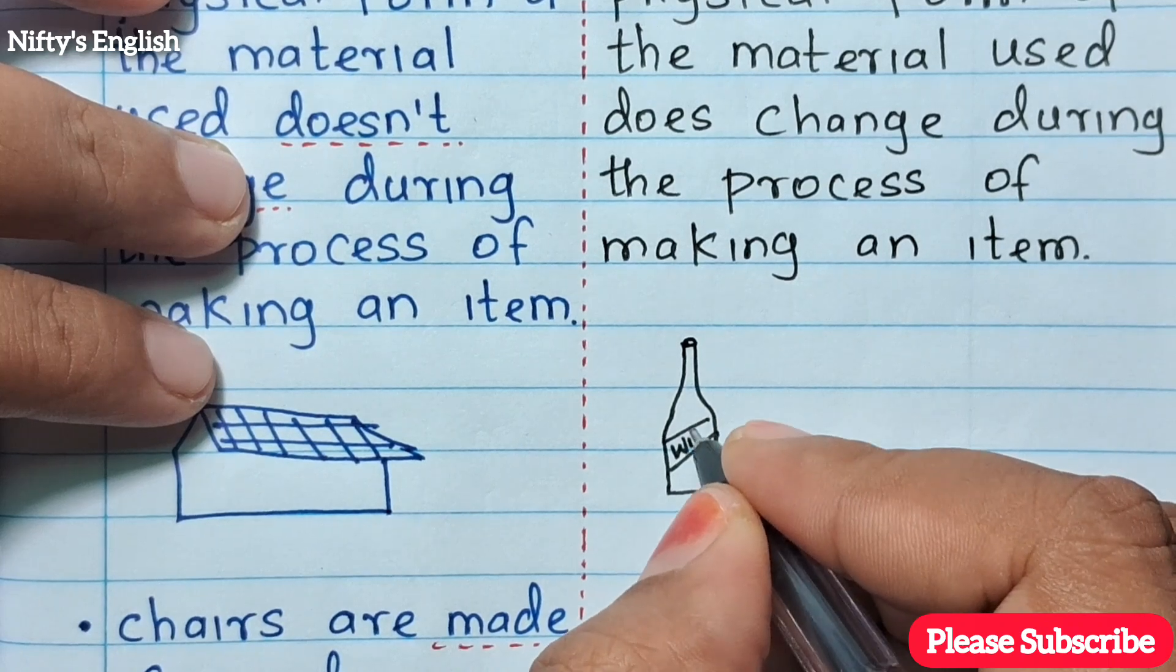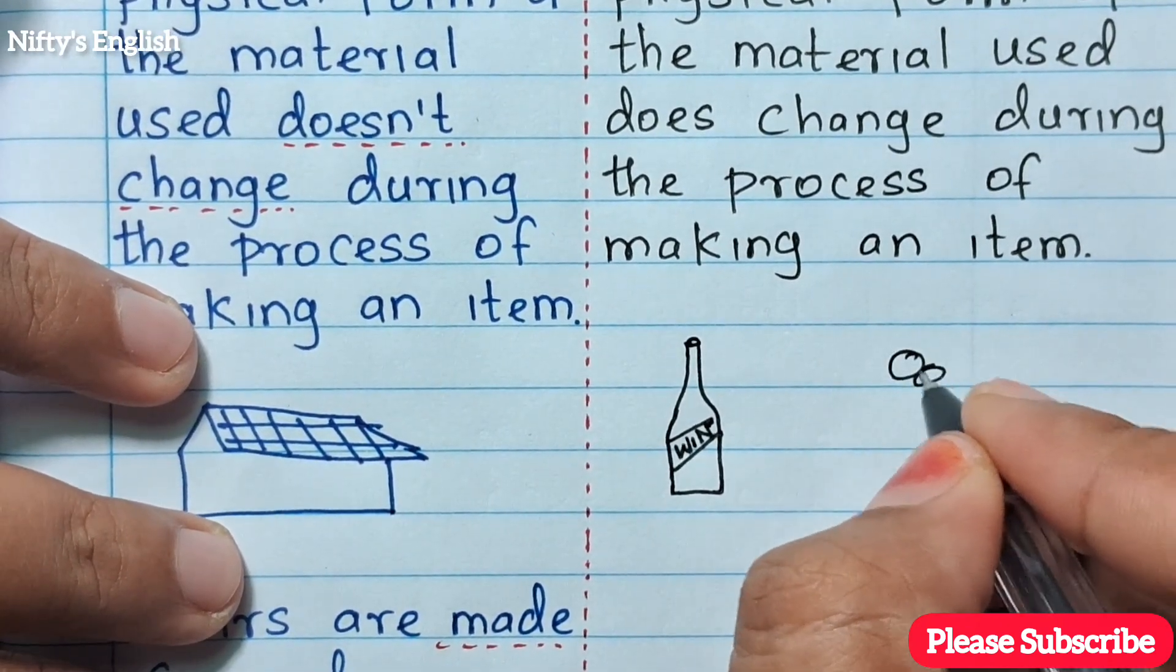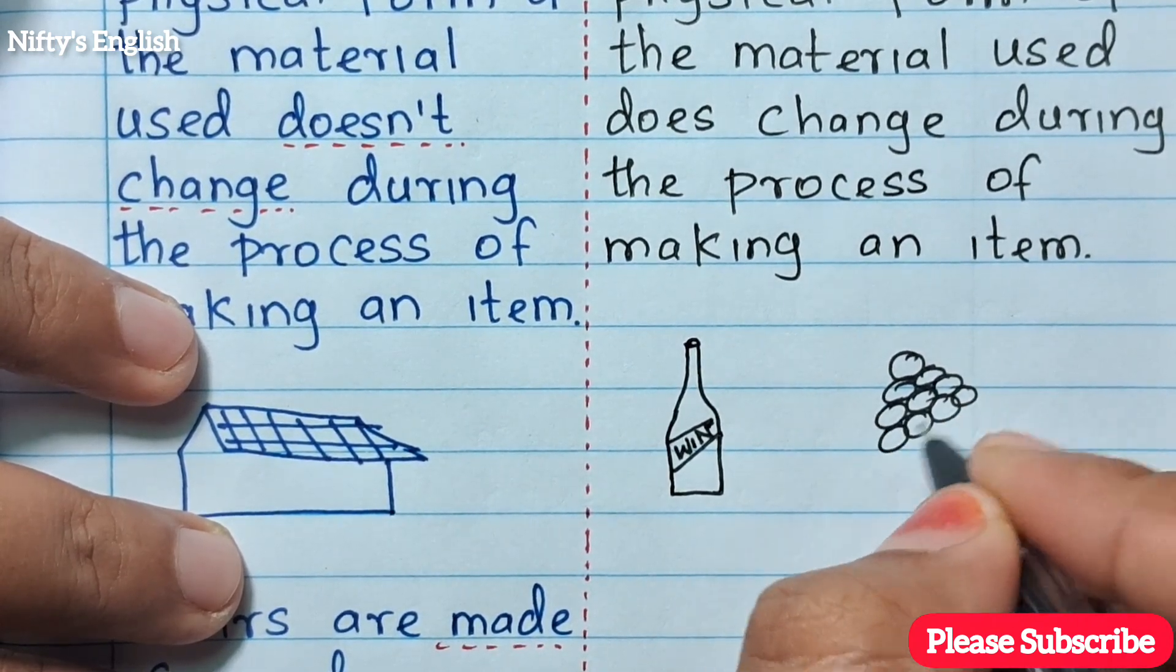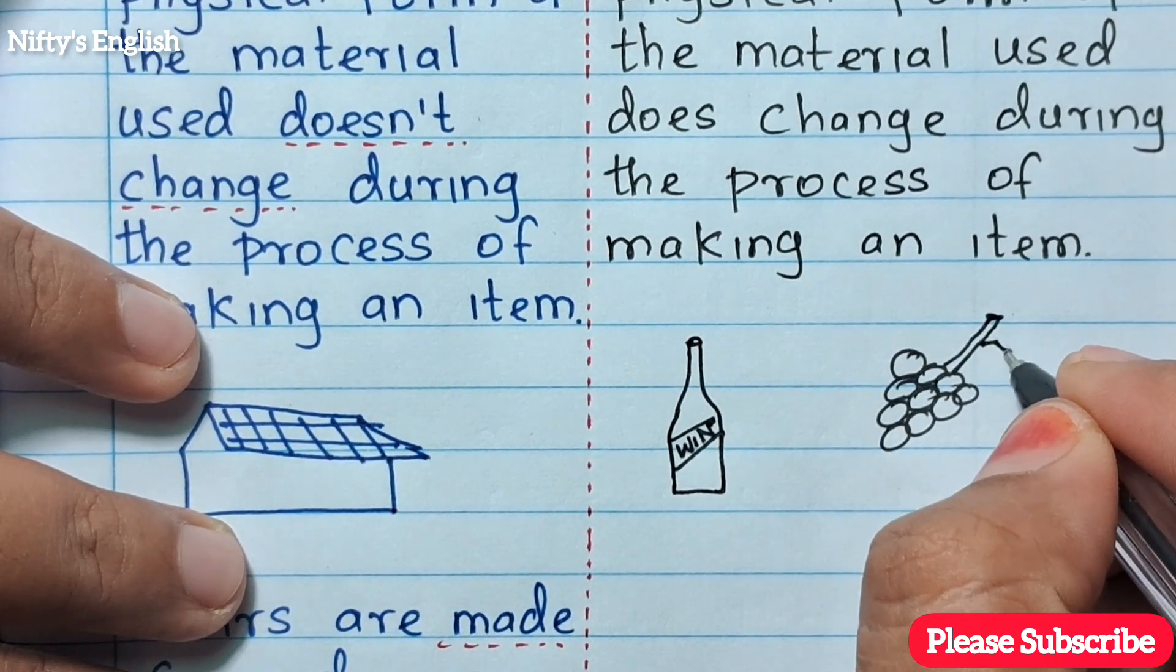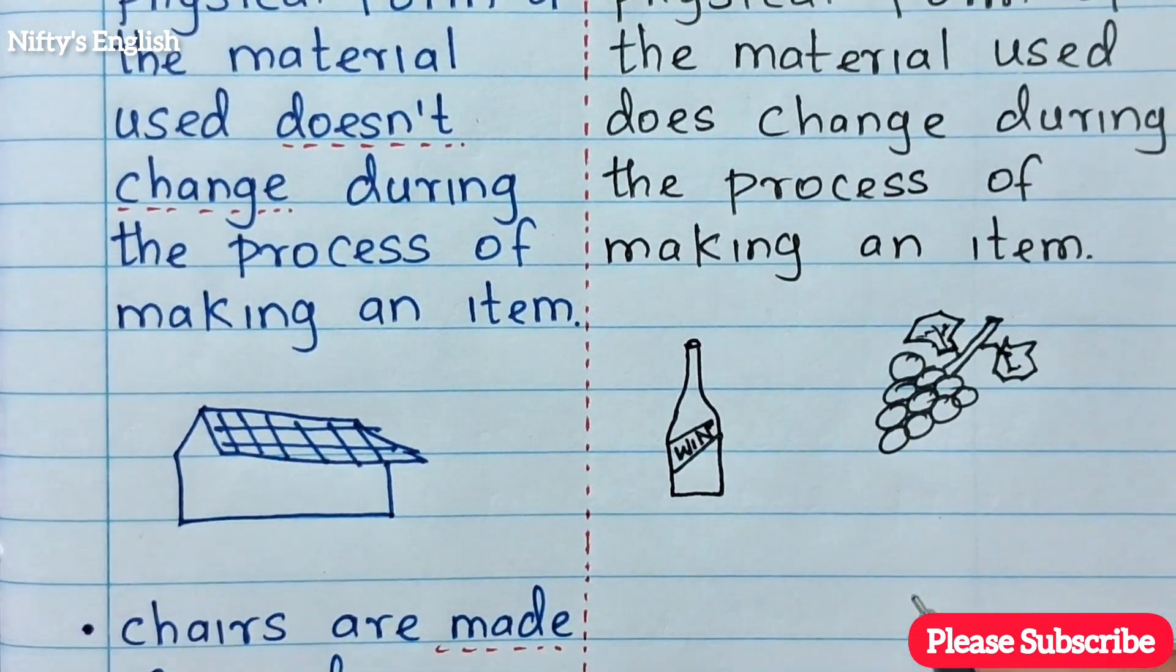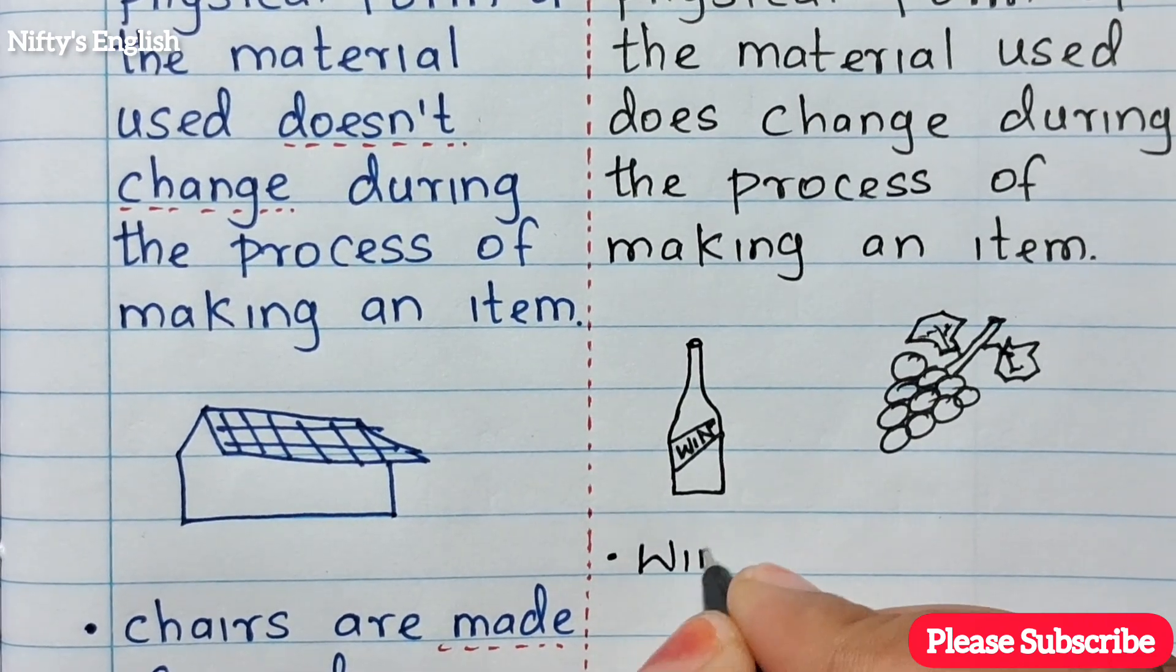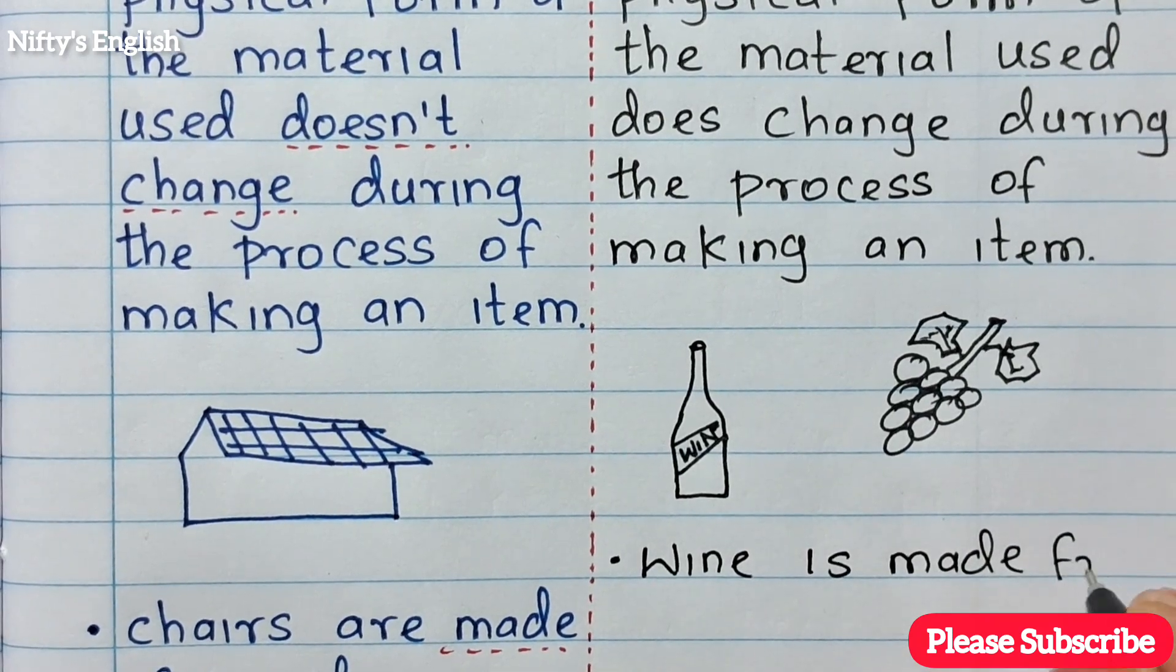I'm just showing the picture. This is the example I want to take. Wine is made from grapes. Paper is made from trees.